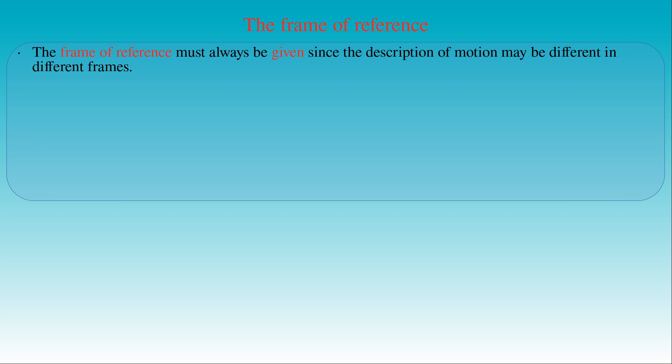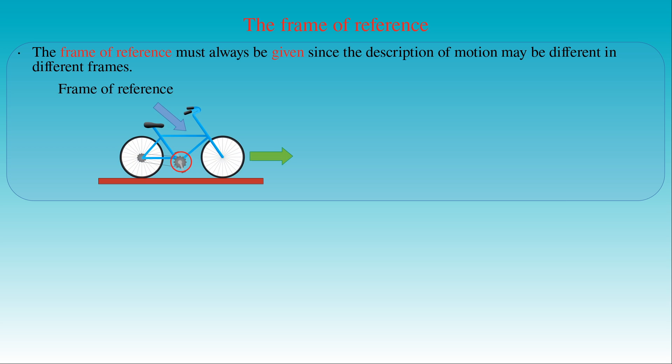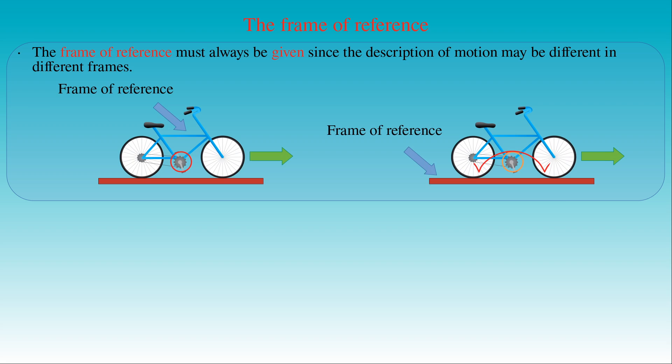Let us discuss the concept of the frame of reference in more detail. The frame of reference must always be given, since the same motion of a body may be completely different with respect to different frames of reference. For example, with respect to the frame of a moving bicycle its pedal runs along a circle, but with respect to the road its motion is described by a cycloid. These two completely different trajectories show how essential a unique frame of reference is in the description of motion.